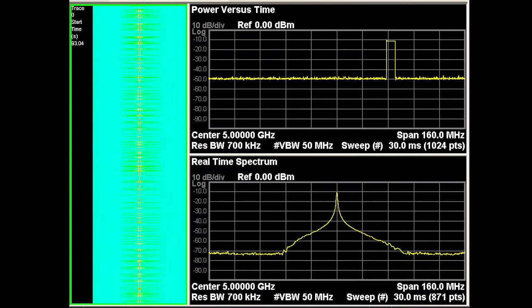The power versus time trace, similar to a zero-span measurement, allows you to see antenna patterns as they scan past our analyzer. It can also detect pulses of widths down to 5 nanoseconds.